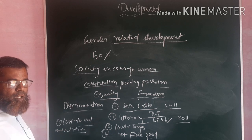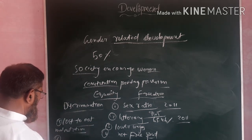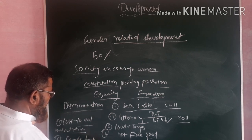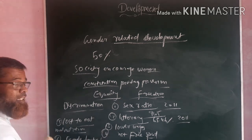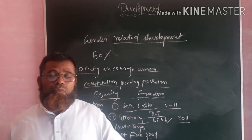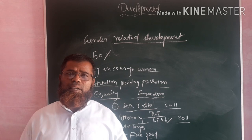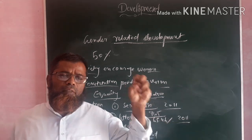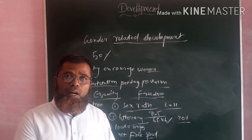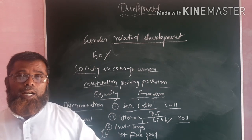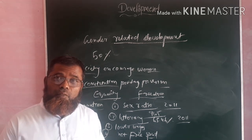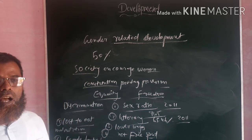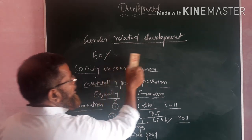Another evil practice is female infanticide — the killing of female fetuses in the womb of a mother. There are different methods used to identify the fetus: if it is found to be a girl, it is killed in the womb itself; if it is a boy, it is left. This is a kind of discrimination responsible for various problems in society.